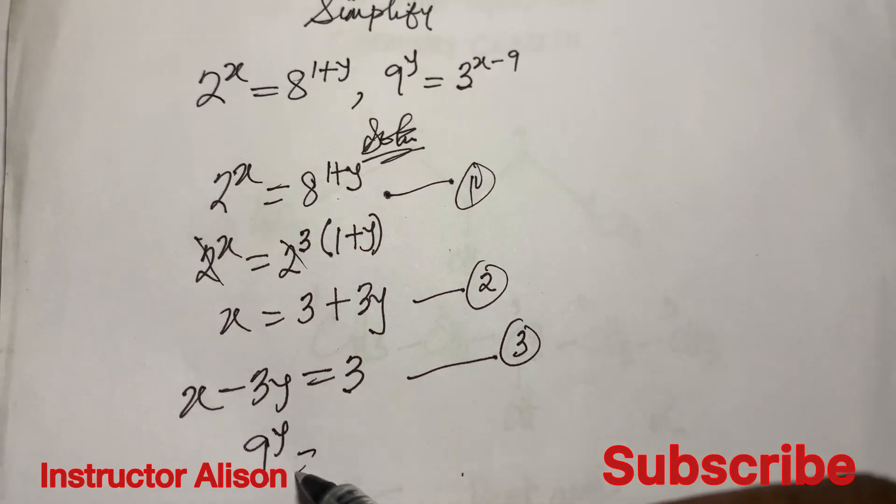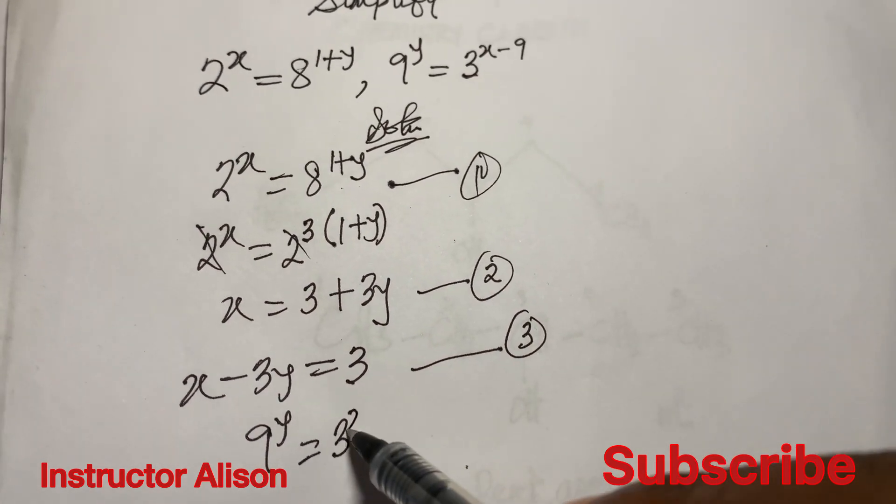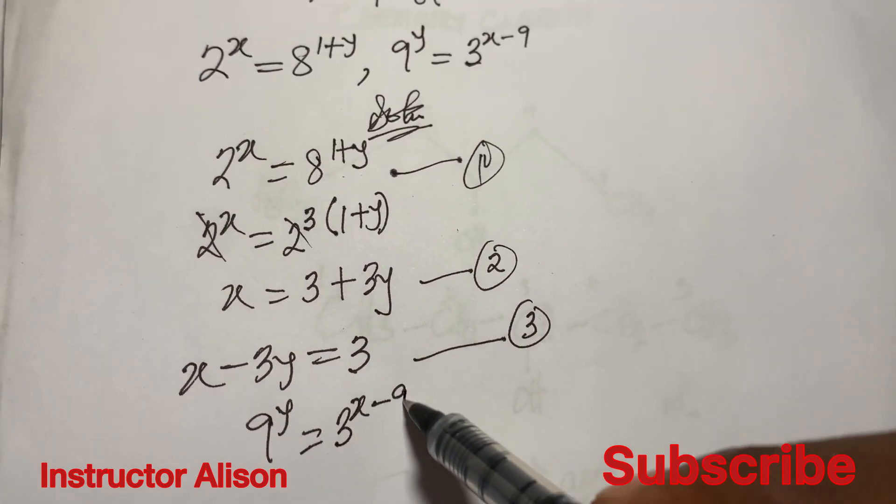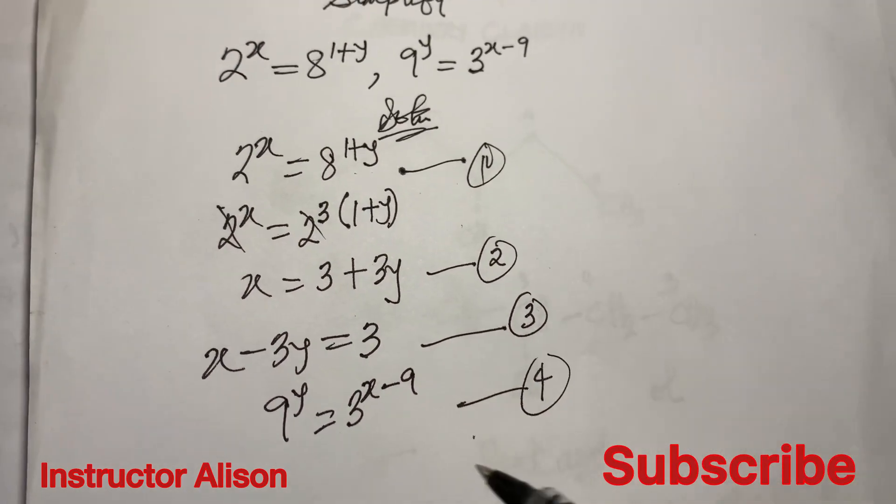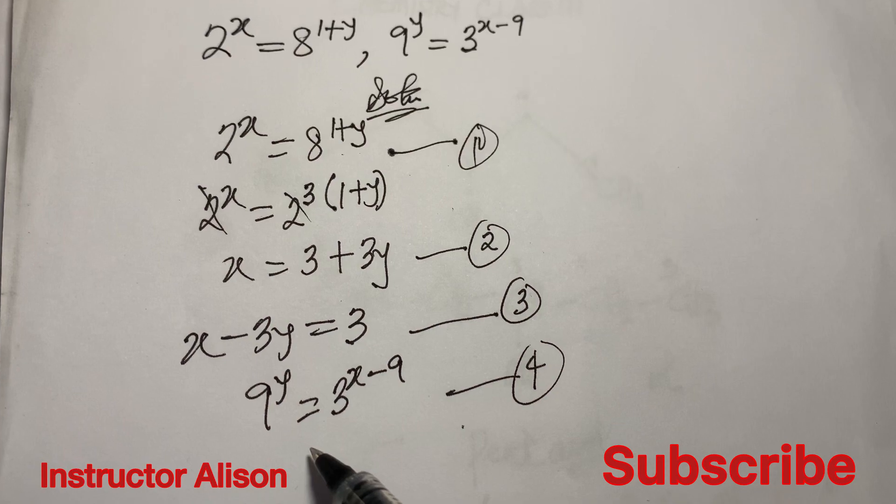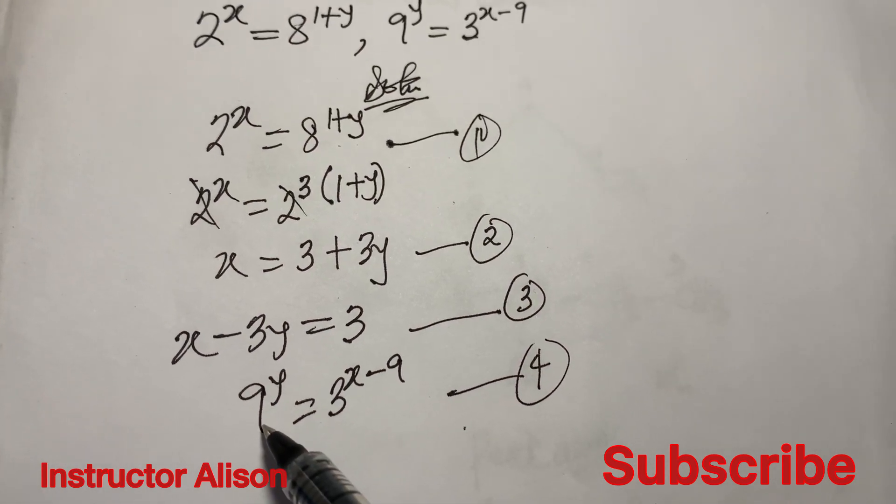Therefore we have x minus 3y equal to 3, and this will be our equation 3. We can make this equation 4.